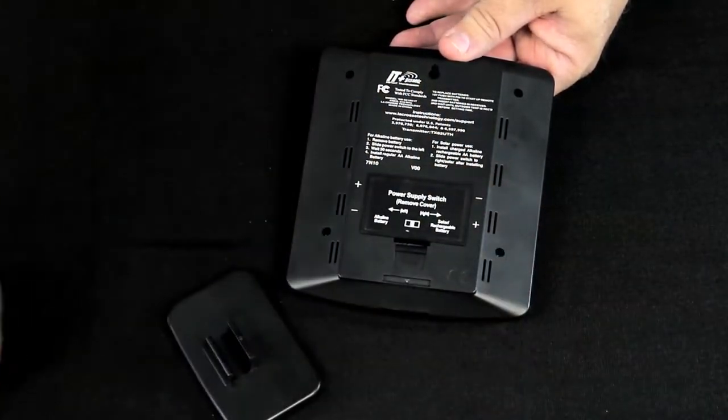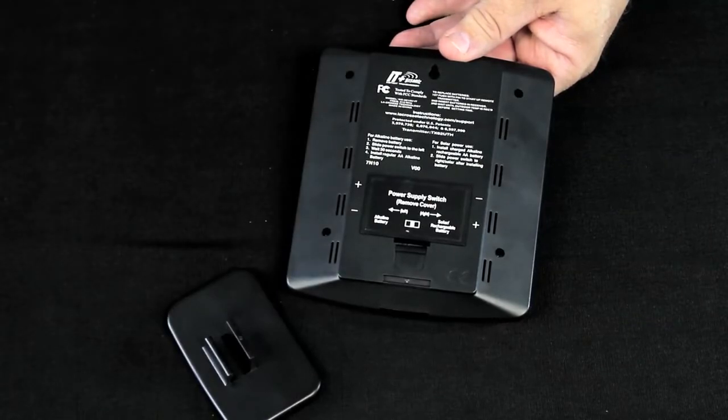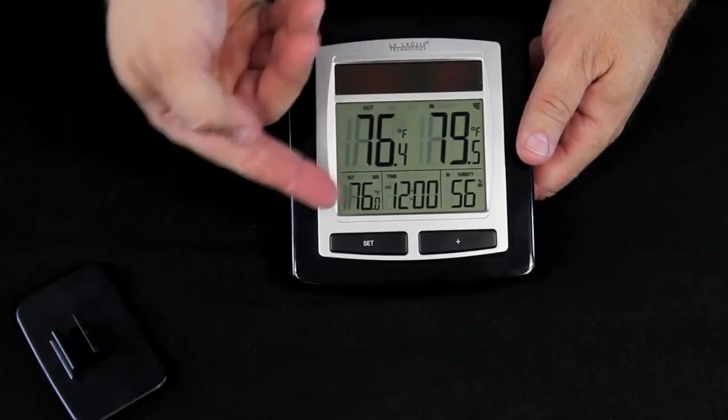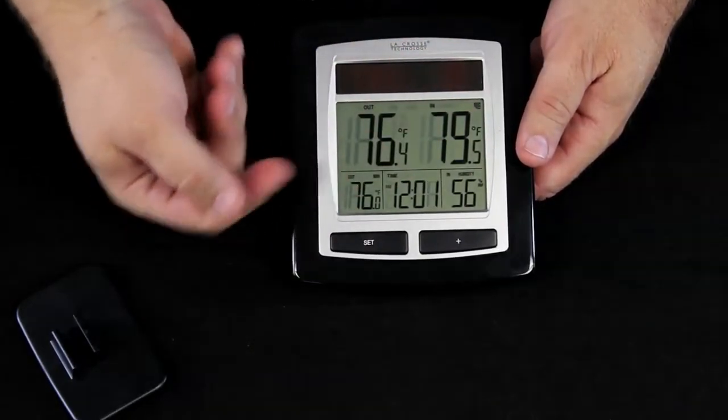We're going to move our solar sensor about three to five feet away for initial setup. You'll notice that as it came up, we have our temperatures, our humidities, and we have a time.